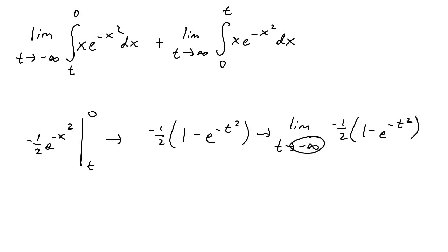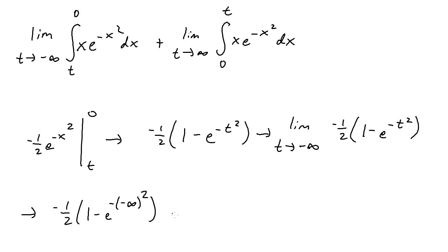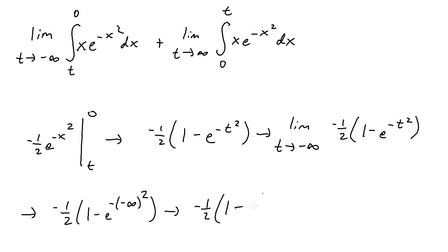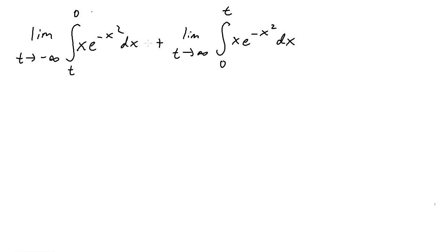So we get negative one-half times one minus zero, which equals negative one-half times one, giving us negative one-half. This is the value of the first limit. Now we need to evaluate the second integral.